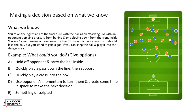These are all conversations you'll have with the player and they'll begin to understand and recognise. Another option: quickly play a pass down the line and support — that opens up the conversation about where to support, what might happen to that player, whether they'll get closed down, and whether you'll be tracked by the player currently putting pressure on your back. Lots of additional questions you can ask to flow the conversation. Or quickly play a cross into the box, or use the opponent's momentum to turn them and create time and space to make the next decision.